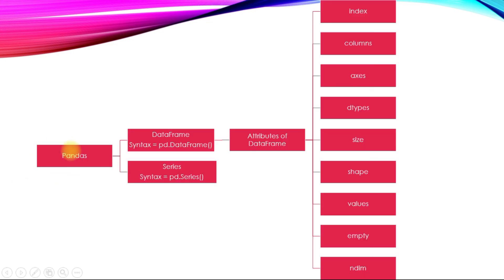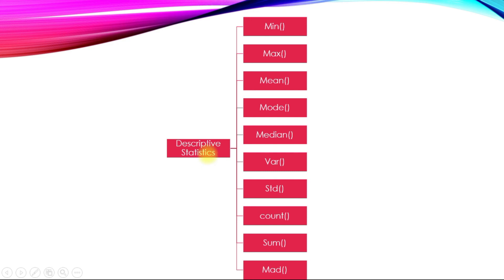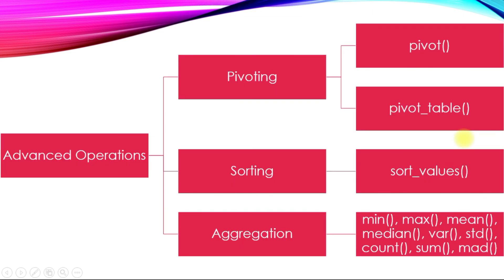First, we saw what pandas is and its two data structures: DataFrame and Series. Next, we covered attributes of a DataFrame: index, column, axis, dtypes, size, shape, values, and empty. Then we covered descriptive statistics functions: minimum, maximum, mean, mode, median, variance, standard deviation, count, sum, and MAD (mean absolute deviation).